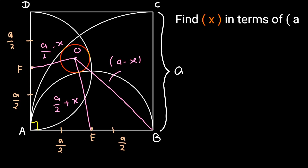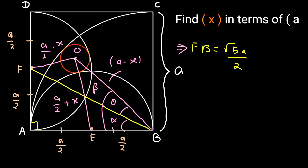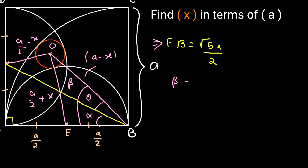Now draw an additional line segment joining F and B. Triangle FAB is a right-angle triangle at A, with height FA = A/2 and base AB = A. Applying the Pythagorean theorem, FB = √5 · A/2. After marking all important line segments, let us define angles: angle FBO = θ, angle FBA = α, and angle OBE = β. We can clearly see the relation: β = θ + α.